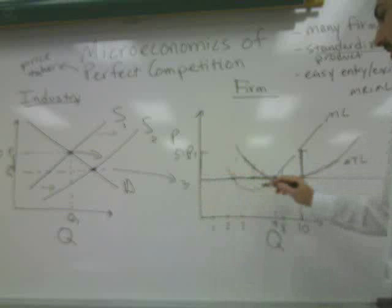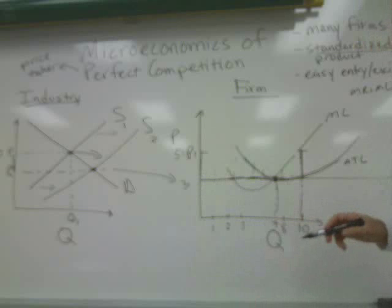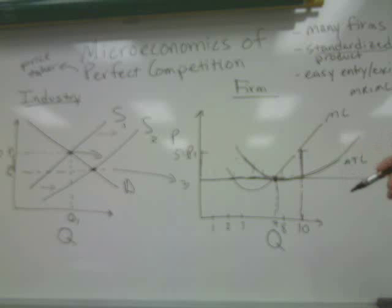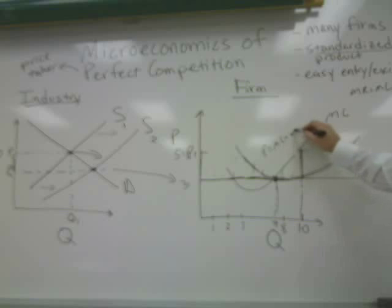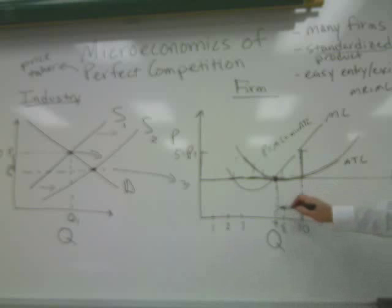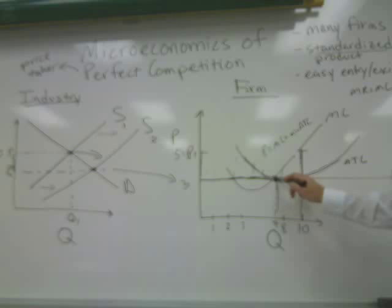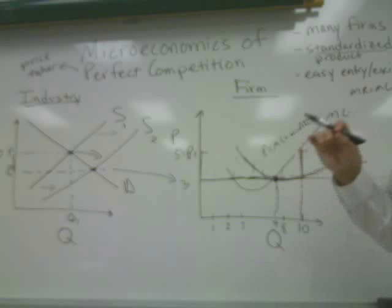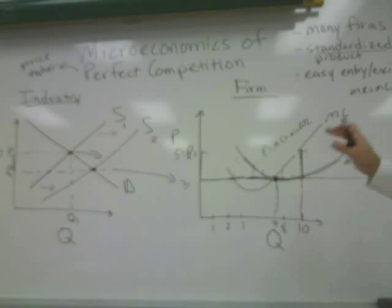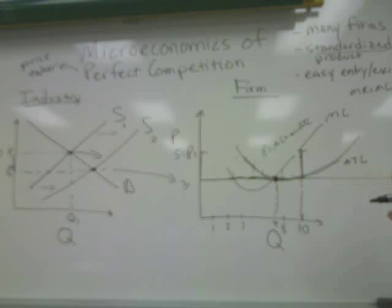If the firm is selling seven units as its profit-maximizing level of output at three dollars, its total revenue would be twenty-one dollars. Because there is a triple equality where price equals marginal cost equals minimum average total cost, the average or per unit cost to produce seven units is equal to the price of three dollars. Therefore, the per unit revenue of three dollars is exactly equal to the per unit cost of three dollars, and this firm is not earning an economic profit anymore — it is only earning a normal profit.